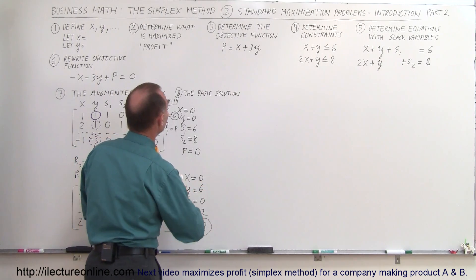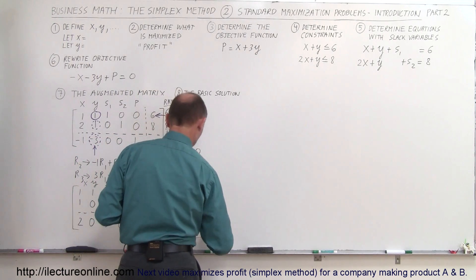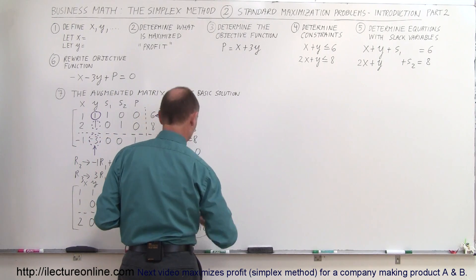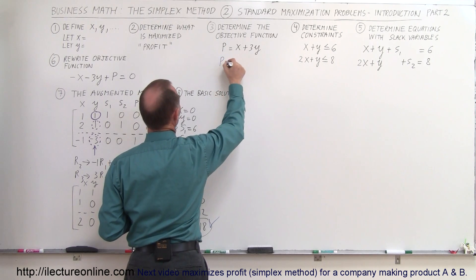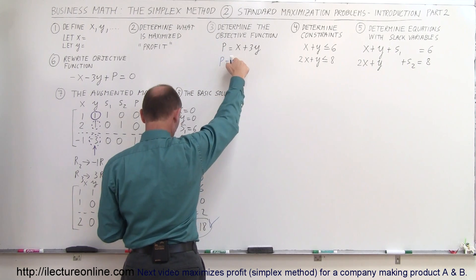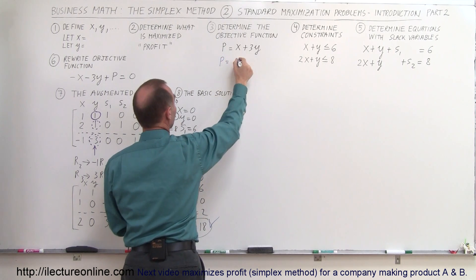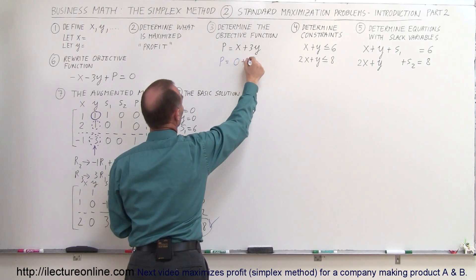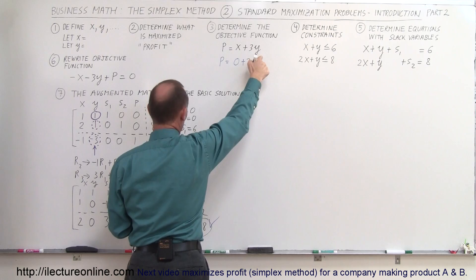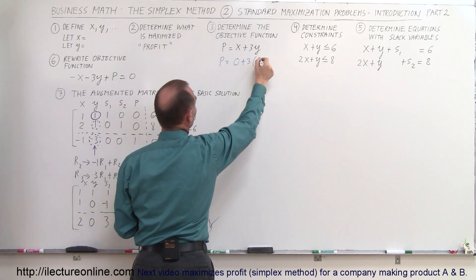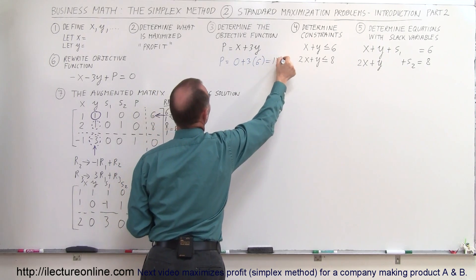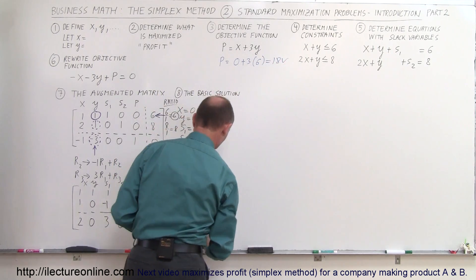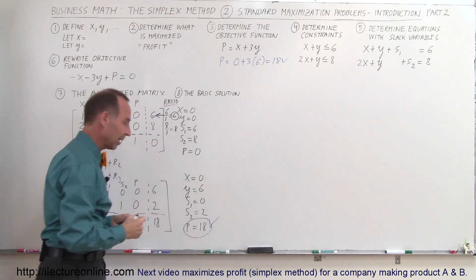Let's verify: plug x equals 0 and y equals 6 into the objective function. Profit equals 0 plus 3 times 6, which is indeed 18 — confirming our result.